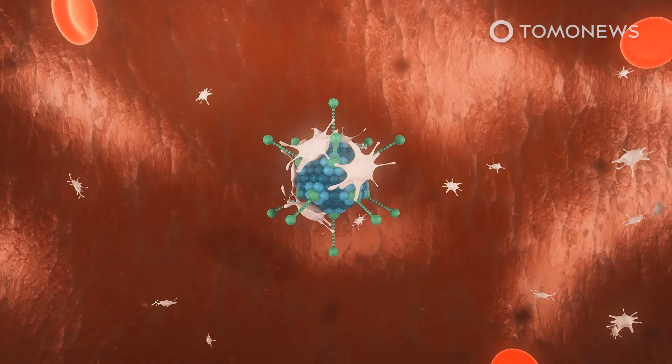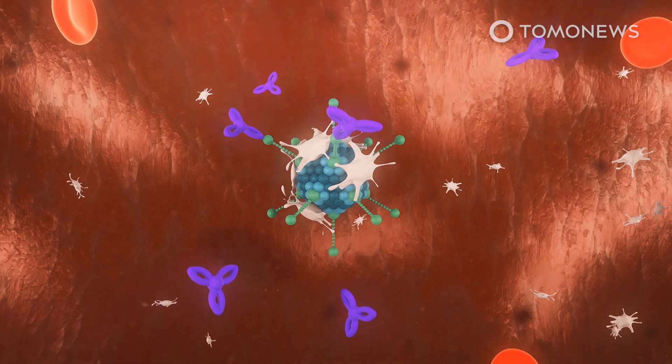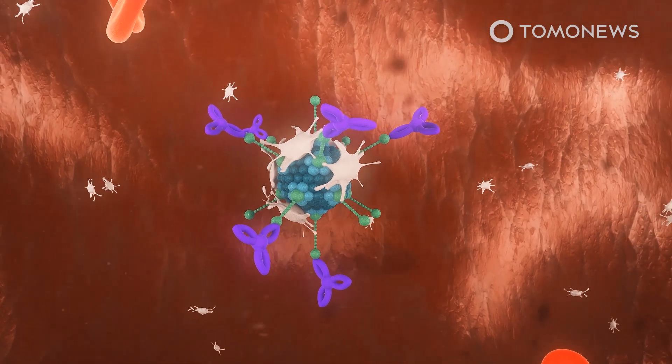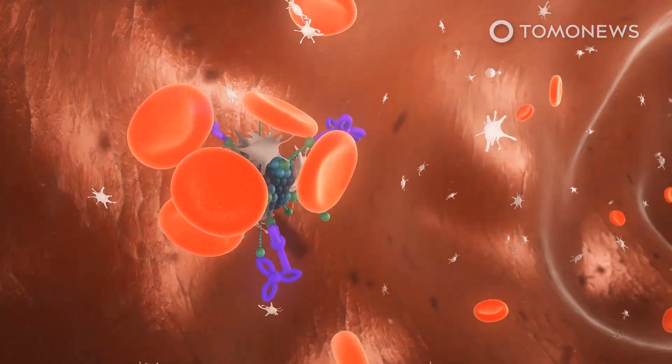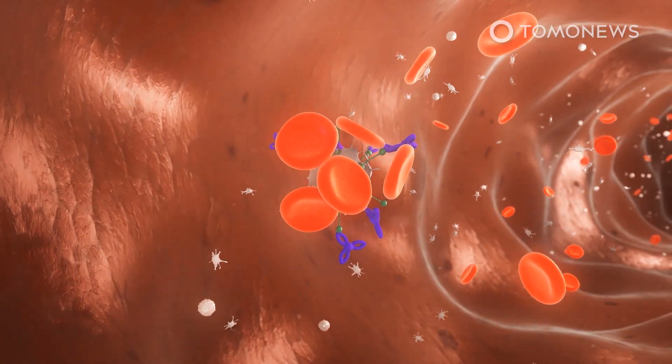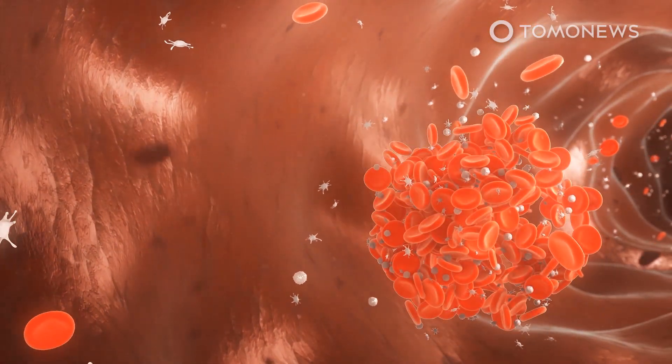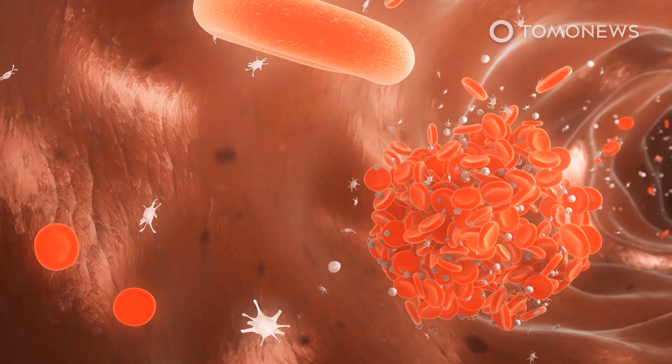From there, in extremely rare cases, the body's immune system can confuse platelet factor 4 for the virus vector and release antibodies to attack it. When this happens, the antibodies and platelet factor 4 can cluster together, resulting in blood clots.